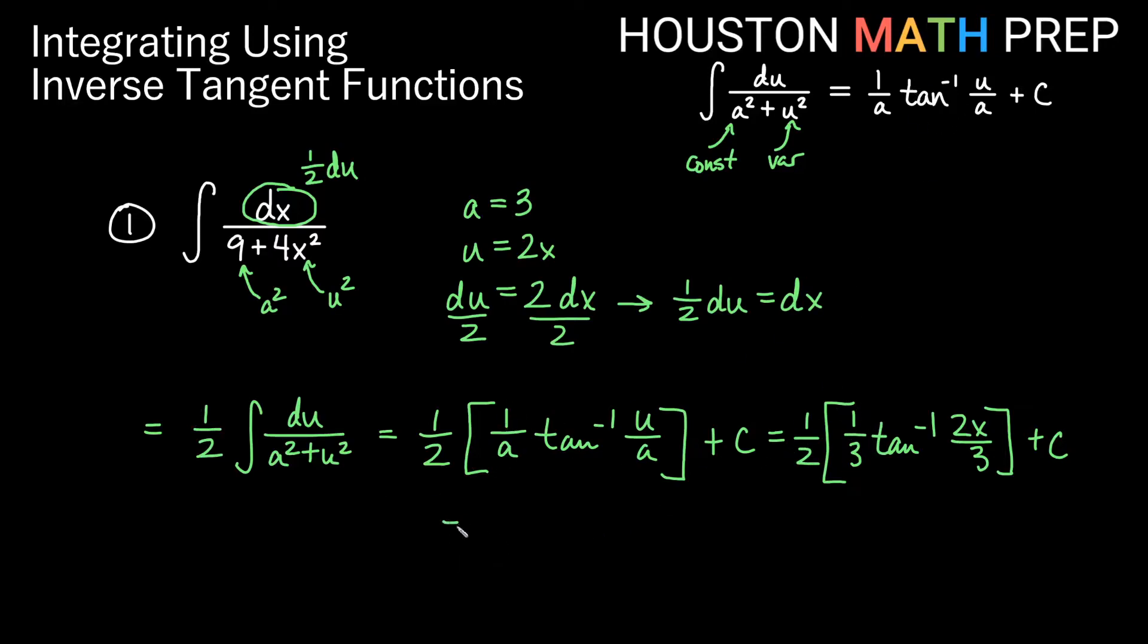And we got 1 third from the 1 over a part of the formula. So really what we want to say here is 1 over 6 inverse tangent of 2x over 3 or 2 thirds x, if you prefer, plus our constant.